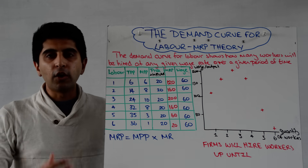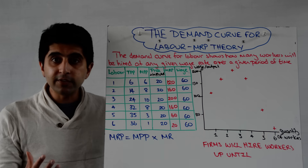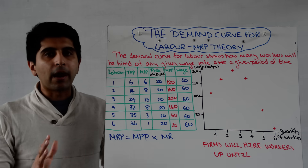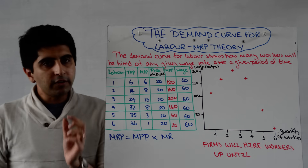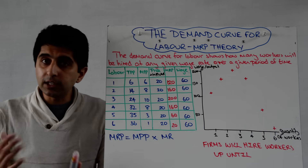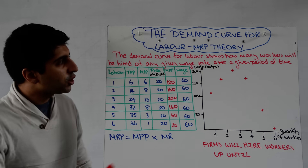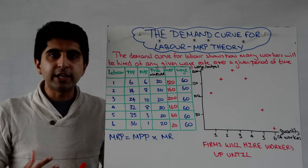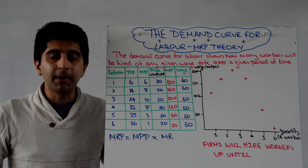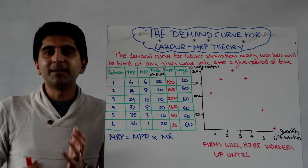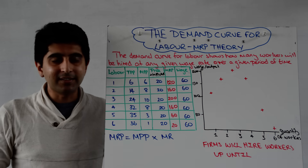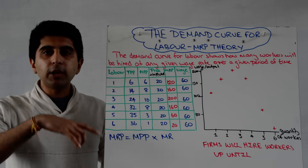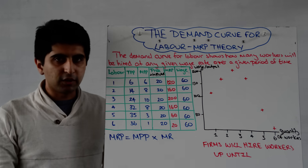In this video we're going to focus on the demand for labour for an individual firm and marginal revenue product theory. Let's start with this definition: what does the demand curve for labour for an individual firm show? It shows us how many workers firms will hire at any given wage rate over a given period of time. At a given wage rate, how many workers will a firm employ — that's exactly what this demand curve should tell us.